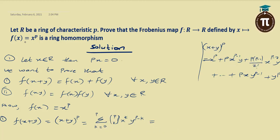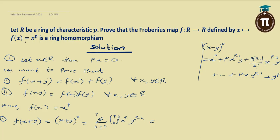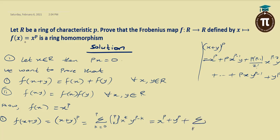The truth of the matter is that, apart from X raised to power P and Y raised to power P, all the other terms of the expansion have P as their coefficient. And P is not at the denominator, so they cannot cancel out. So I want to rewrite this as X raised to power P plus Y raised to power P plus the summation of K starting from 1 to P minus 1 of the binomial coefficient P-choose-K times X raised to power K.